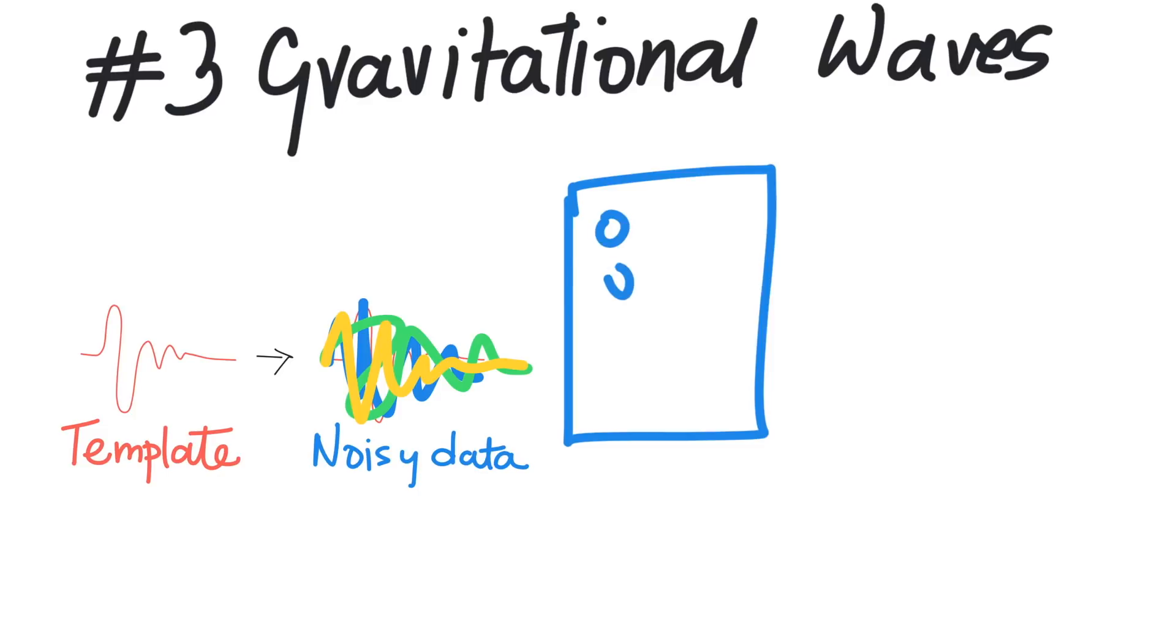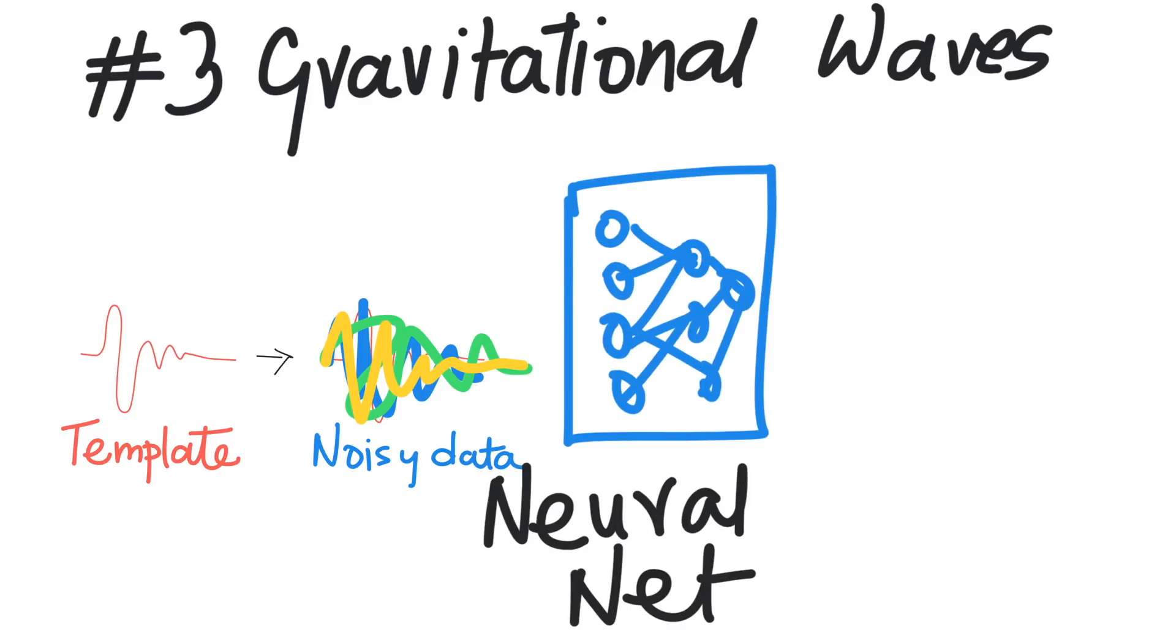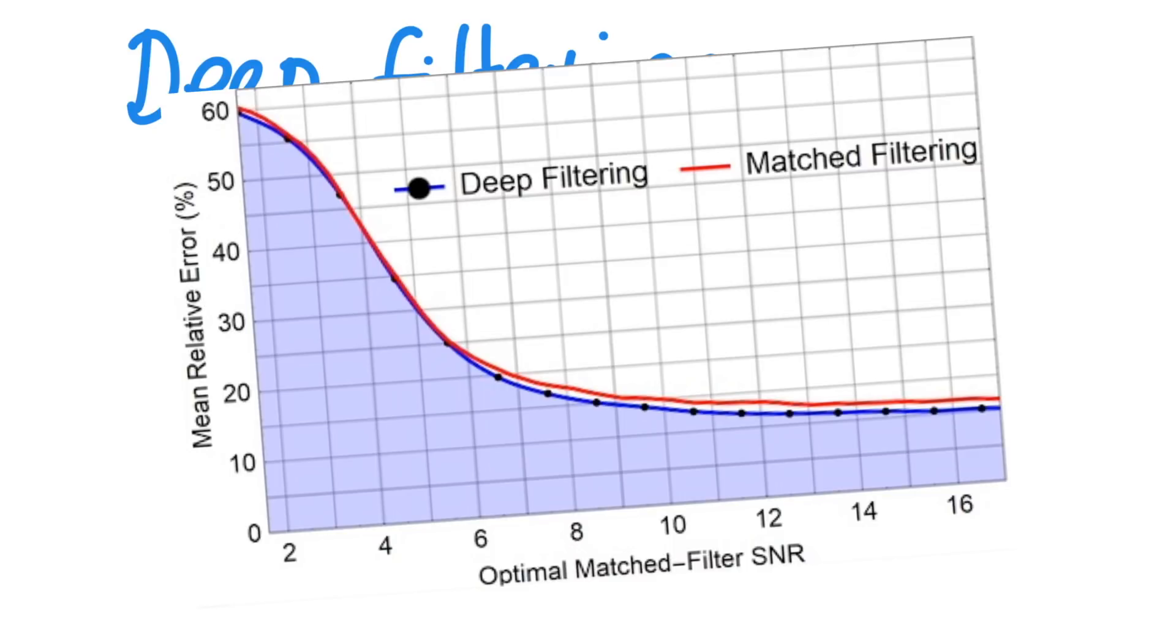Again, a convolutional neural network was able to achieve the same performance as matched filtering. The technique worked really well for both detection and parameter estimation. The model automatically encodes thousands of templates mixed with noise.